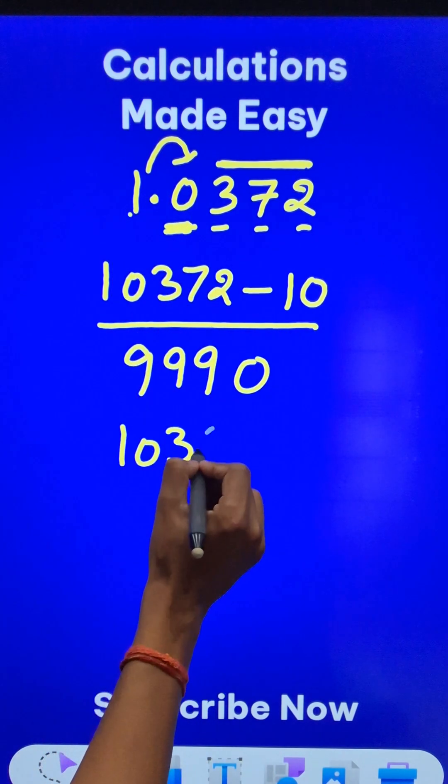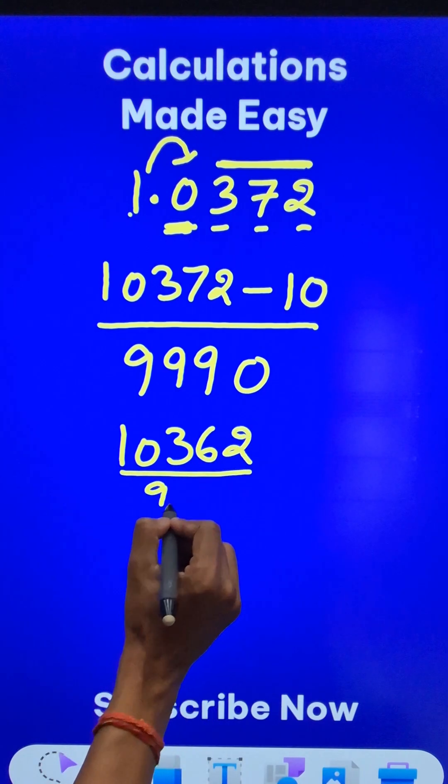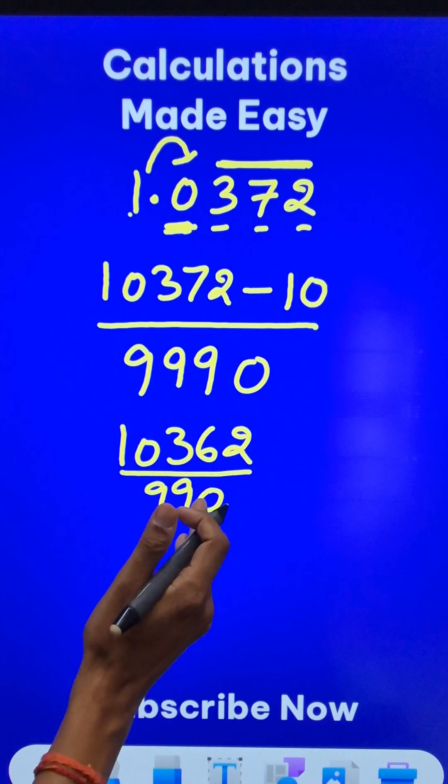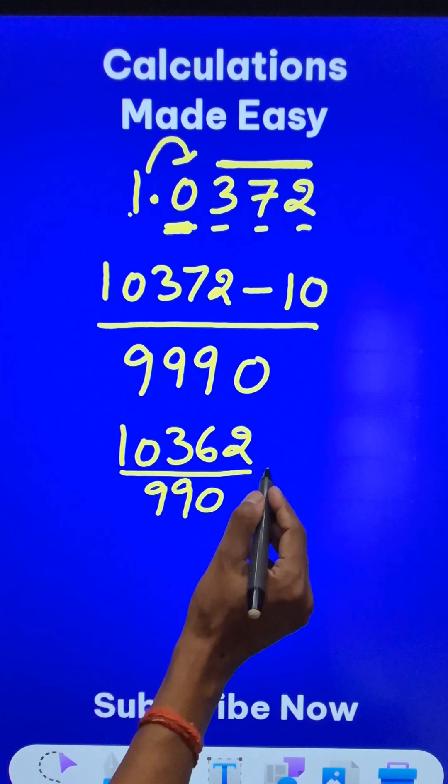Now 10362 in the numerator and 9990 in the denominator. We can reduce this to the lowest form. So I think they are divisible by 2.